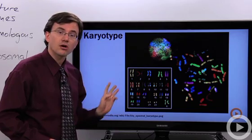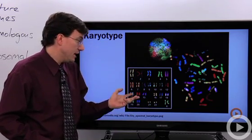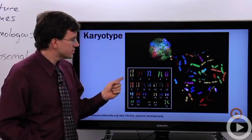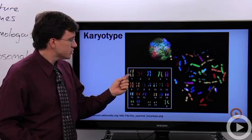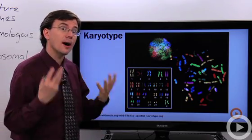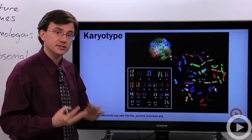The chromosomes here are arranged and named in order of their size. You can see that these two match each other. Again, they're called homologous chromosomes. They carry similar traits.